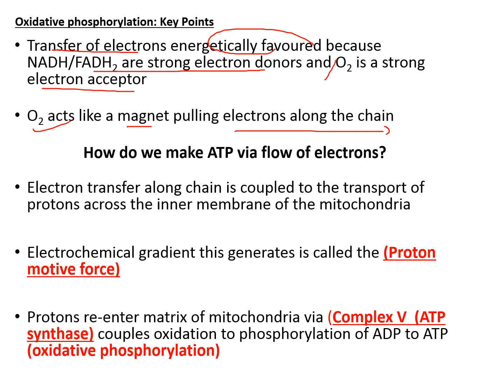How do we make ATP via the flow of electrons? The flow of electrons is coupled with the transport of protons across the inner membrane of the mitochondria. The energy from the flowing electrons is used to pump protons across the inner membrane into the inter-membrane space, building up a gradient known as the proton motive force. When these protons re-enter the matrix via complex 5, or ATP synthase, this energy is used to synthesize ATP.